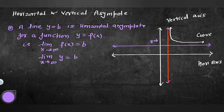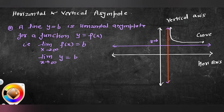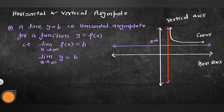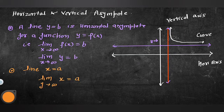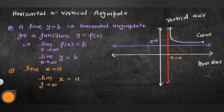Vertical asymptote x = a ہوتا ہے جب limit as y tends to infinite ہو اور x = a ہو۔ یعنی x = a پر curve کٹتا ہے اور y infinite ہو جاتا ہے — یہی vertical asymptote کی definition ہے۔ چلتے ہیں question کی طرف تاکہ اس پوری کہانی کا مطلب بالکل clear ہو جائے۔